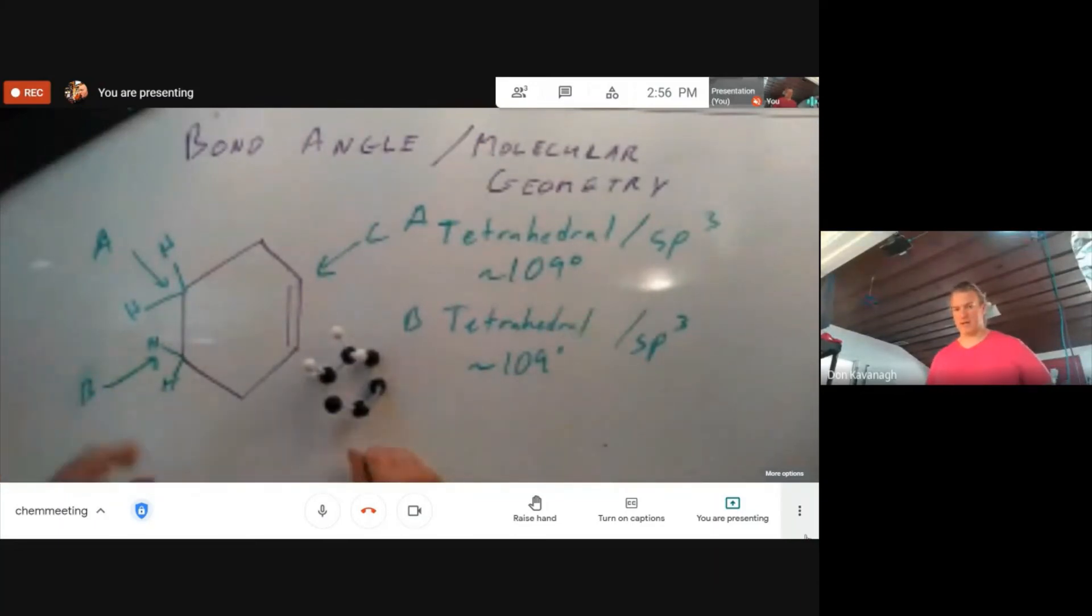Molecular geometry and hybridization. When you have hydrogens on there, you can see the pucker and the twist that can occur in this cyclohexene. Finally, atom C, or carbon C. Let's draw the hydrogen on there.